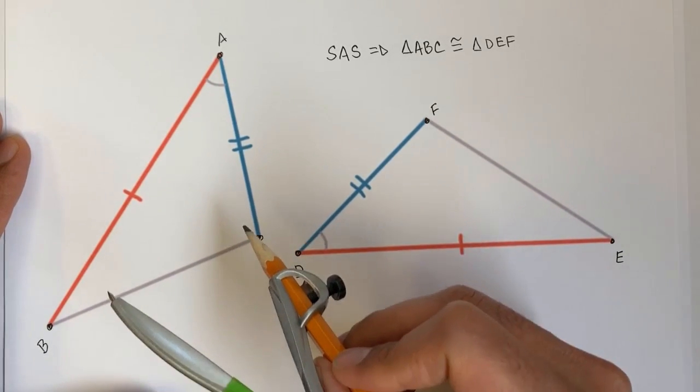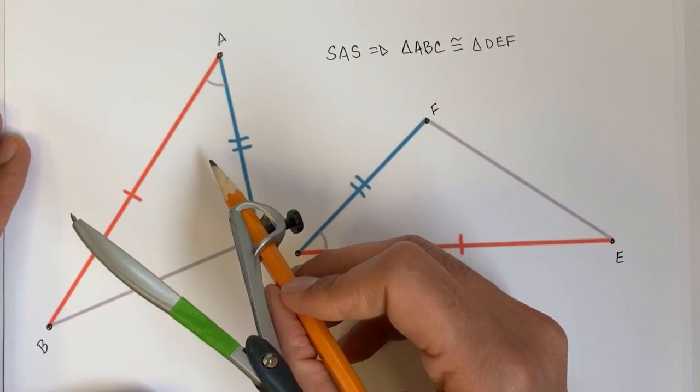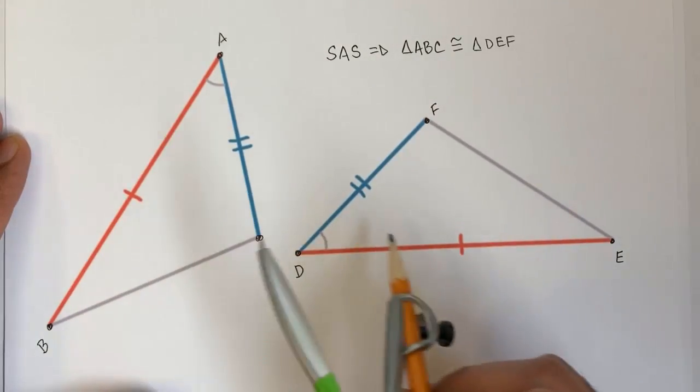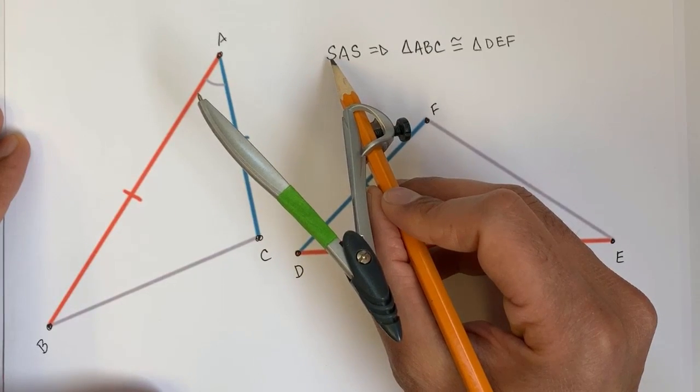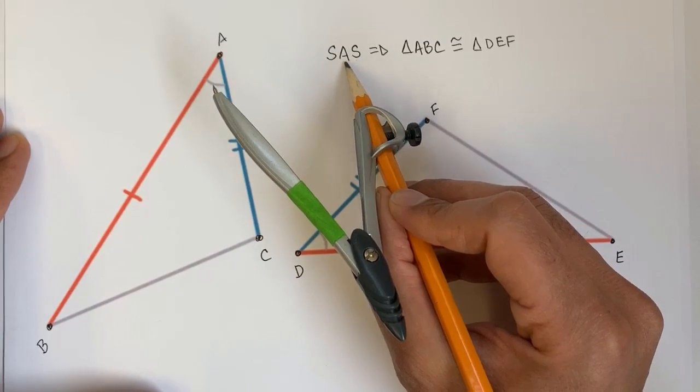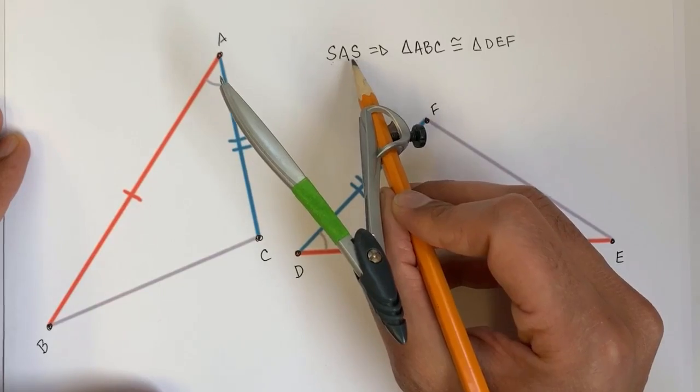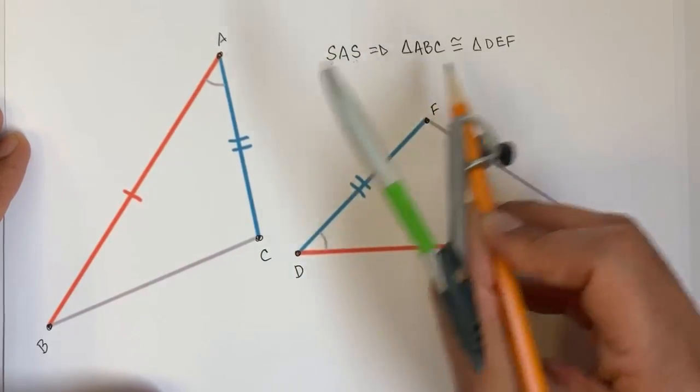If those have the same lengths or measures, then we can deduce that these two triangles must be congruent by the rigid motion definition of congruency. Or the shorthand is, if we have side, angle, side in common, and the angle is between the two sides, then the two triangles will be congruent.